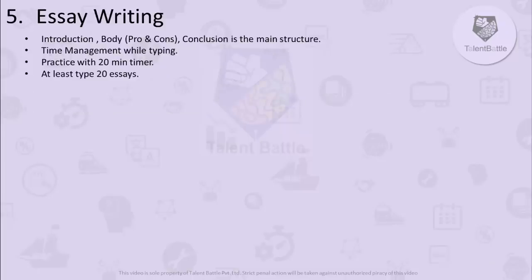Last but very important is the essay writing part. The key is structure: always divide your essay into an introduction, the body (covering positive and negative sides of the topic), and the conclusion. Time management is crucial — many students write the introduction and body but run out of time before the conclusion. Practice essay writing with a 20-minute timer, typing at least 20 essays. Divide your 20 minutes: allocate time for the introduction, body, and conclusion, and keep 3 to 4 minutes in buffer to check for grammatical or spelling mistakes and ensure all relevant points are covered.